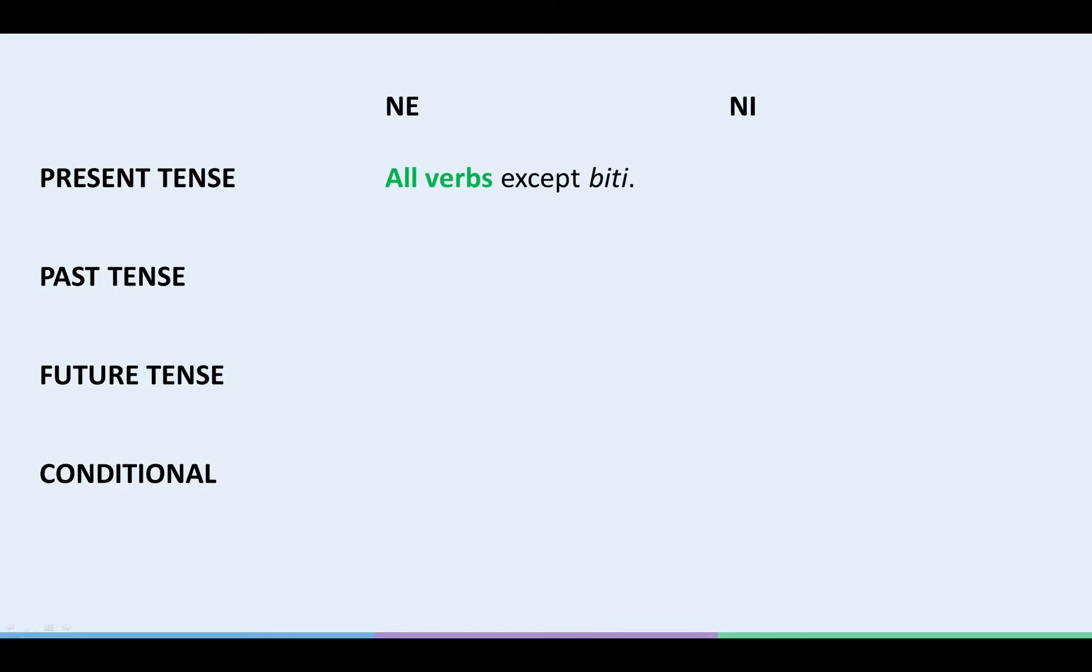In the present tense, we always use NE to negate verbs. The only three exceptions are BITI, TO BE, IMETI, TO HAVE, and HOTETI, TO WANT. See the relevant video on TO BE, TO HAVE, and TO WANT on this same channel. For example, ON NE RAZUME. HE DOESN'T UNDERSTAND.